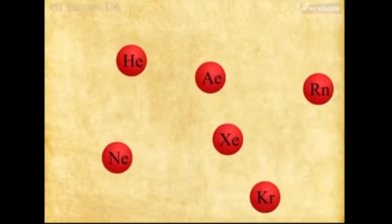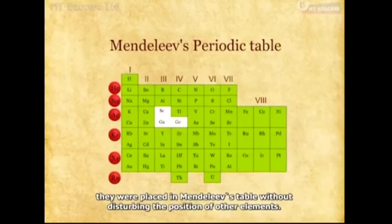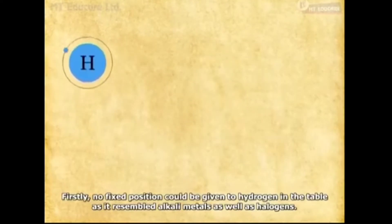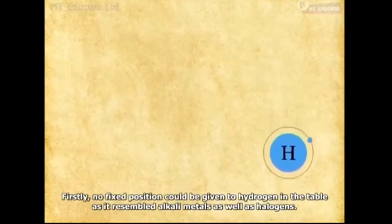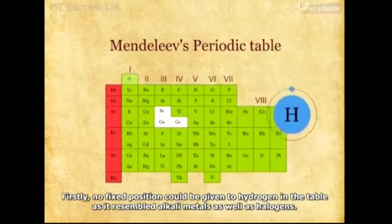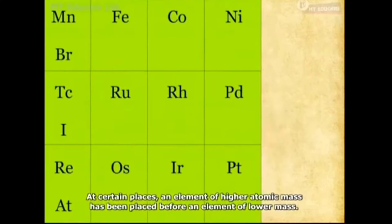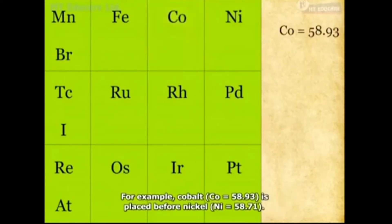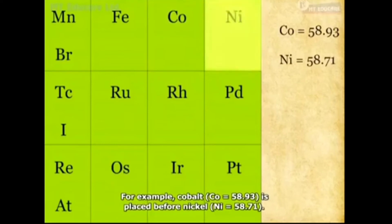When noble gases were discovered, they were placed in Mendeleev's table without disturbing the position of the other elements. However, Mendeleev's periodic table had its own demerits. Firstly, no fixed position could be given to hydrogen in the table, as it resembled both alkali metals and halogens. Also, at certain places an element of higher atomic mass was placed before an element of lower atomic mass — for example, cobalt with atomic mass 58.93 is placed before nickel with atomic mass 58.71.